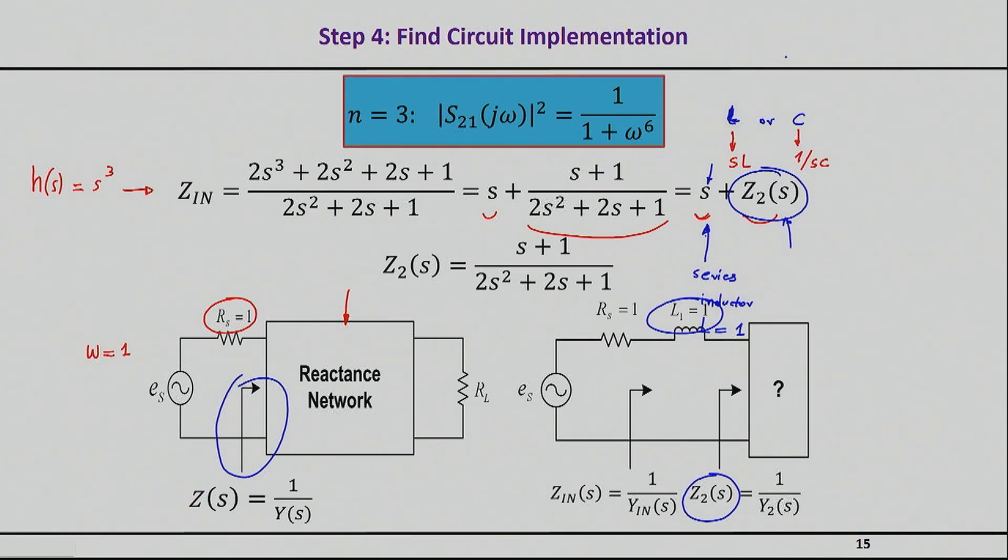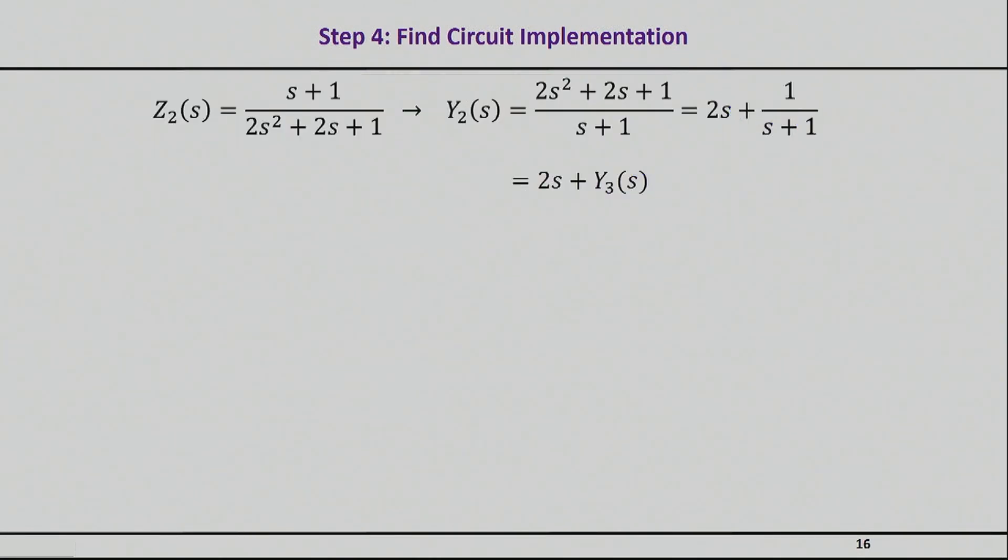Now, if you look at this Z2 now, I have to find the network that realizes this. I can't really play the same trick because now my numerator is actually one order less than the denominator. But I can actually now work with my admittance, Y of 2. So I will basically work with my admittance. Y of 2 will be obviously the inverse. And I will do again the same type of polynomial division. And I will end up with this guy here. So I will have 2S as the first element and another admittance Y of 3 following that.